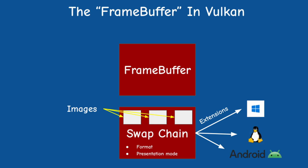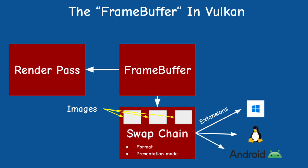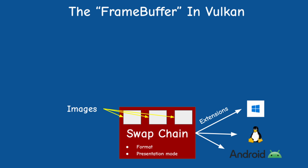The framebuffer connects between the swapchain images and the render pass, which is yet another object that defines how exactly the images are going to be used - whether this is for color, depth, stencil, and so on. In this video we will focus on the swapchain.